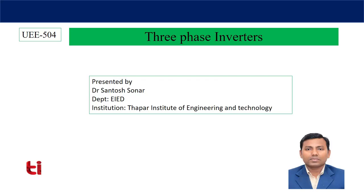Today I am going to discuss 3-phase inverters. In the last class we discussed performance parameters of inverters, applicable for both 3-phase and single-phase inverters, and we discussed the single-phase full bridge inverter. Here we will discuss 3-phase inverters — across the output we will get 3-phase output voltages. Some basic features of a 3-phase system are that the voltages must be 120 degrees out of phase, and based on that we will generate switching pulses to get balanced 3-phase output voltage.